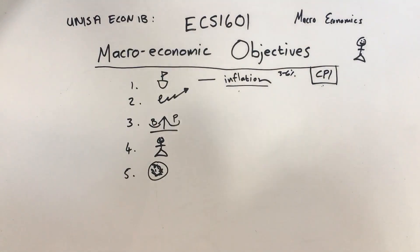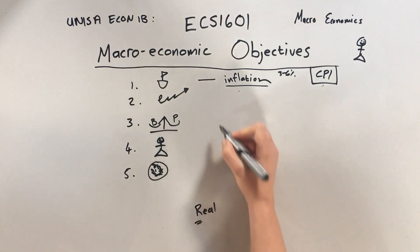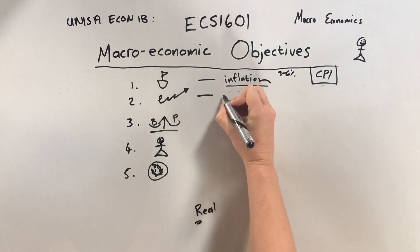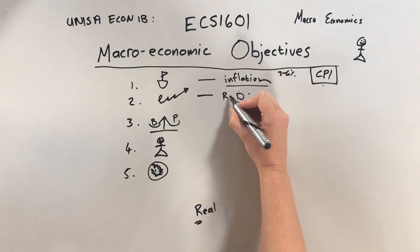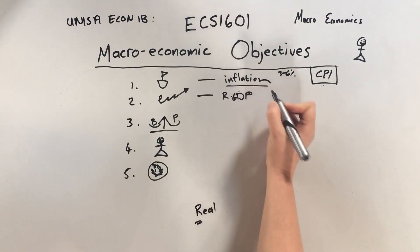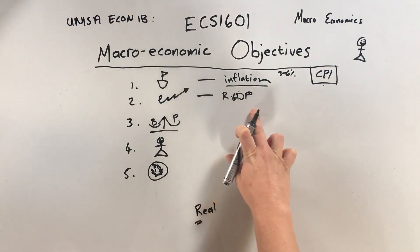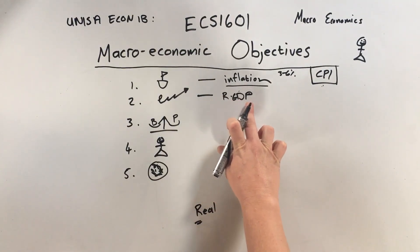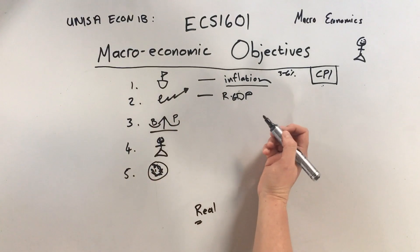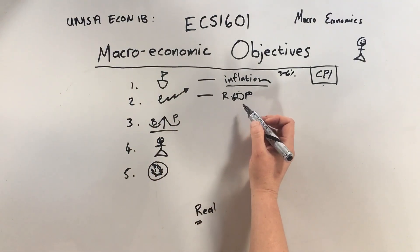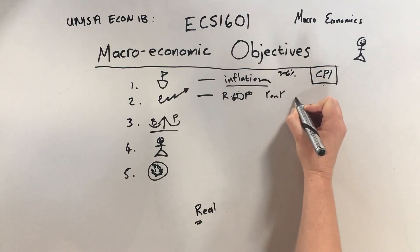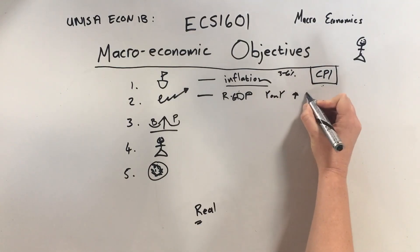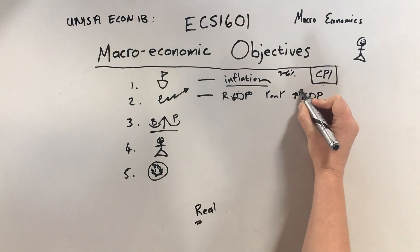Economic growth is measured in real terms — not nominal. Real means we take inflation out of it to measure it. We use GDP — Gross Domestic Product — to measure economic growth, and we look for a year-on-year increase in real GDP.